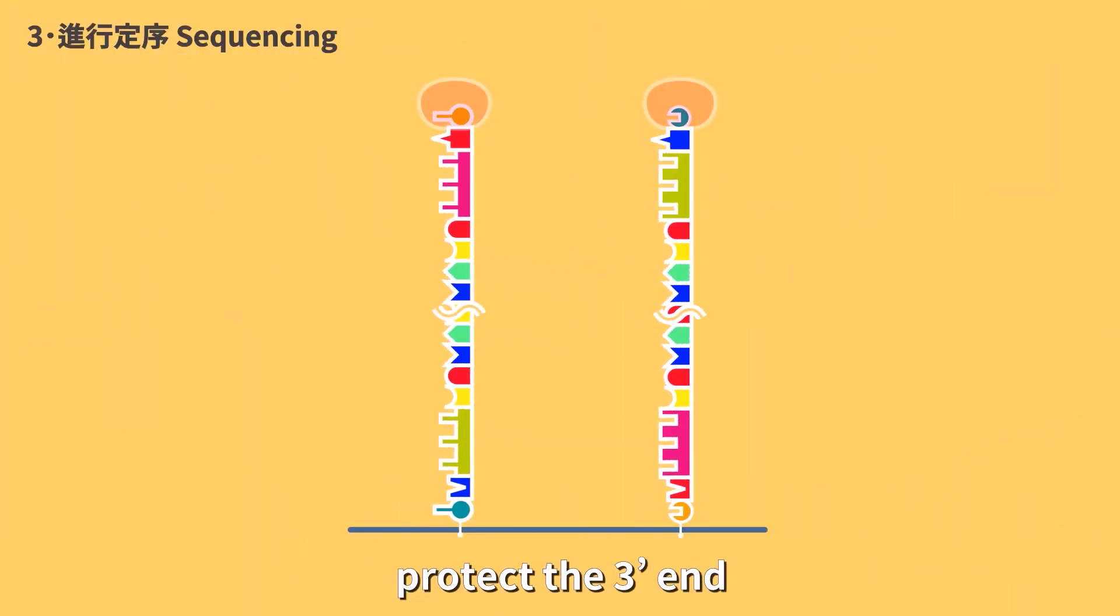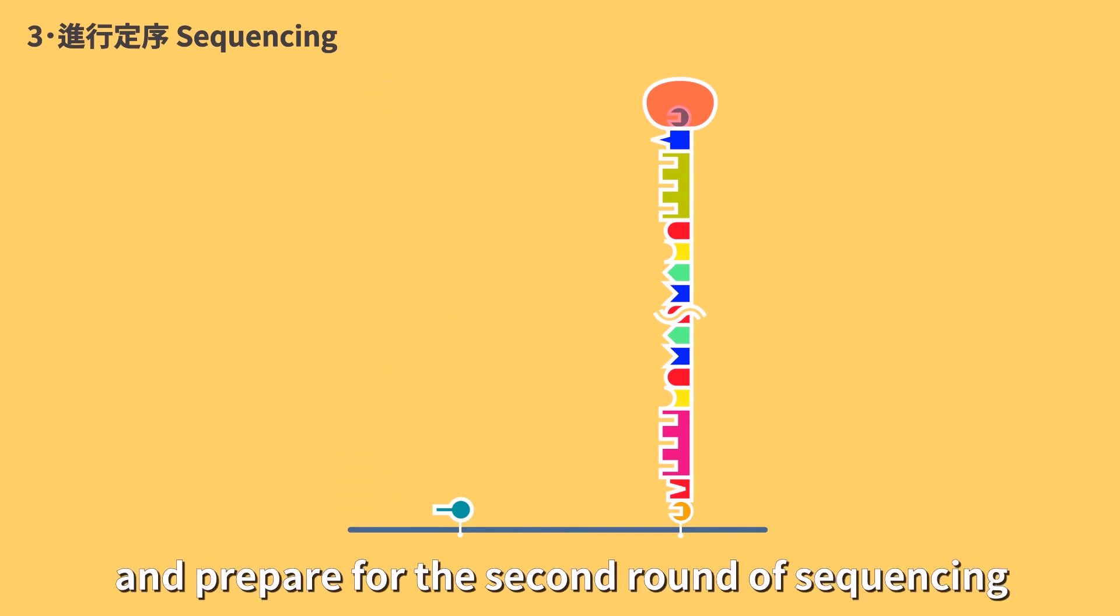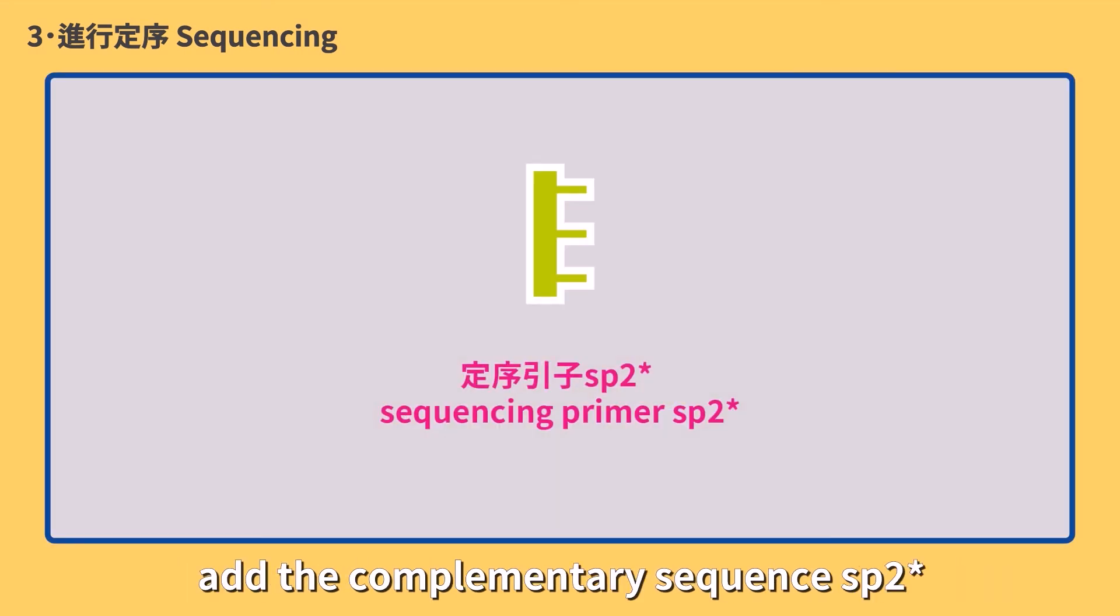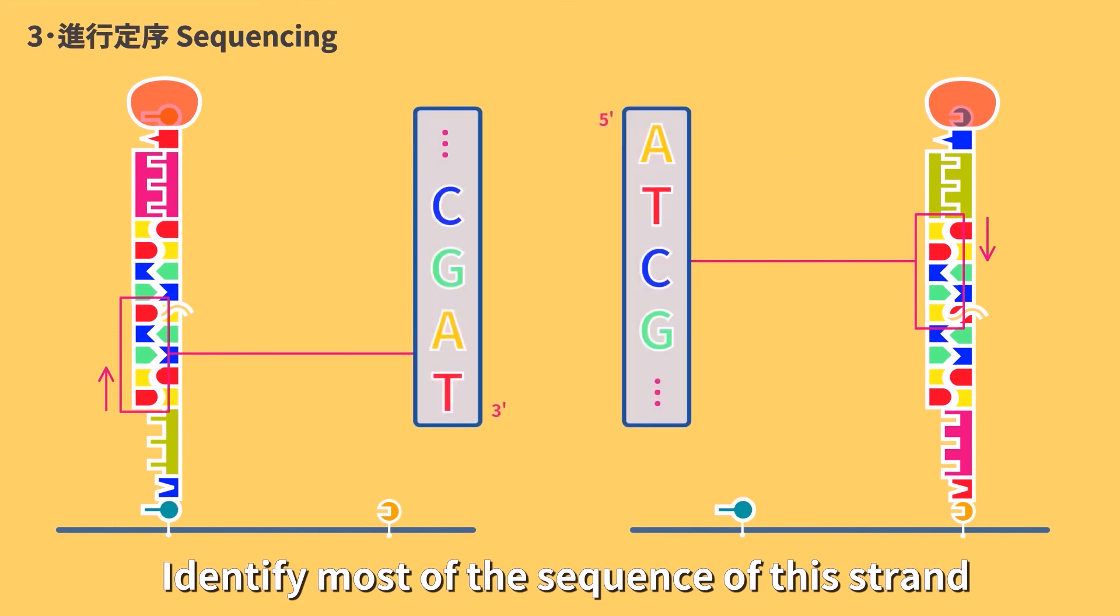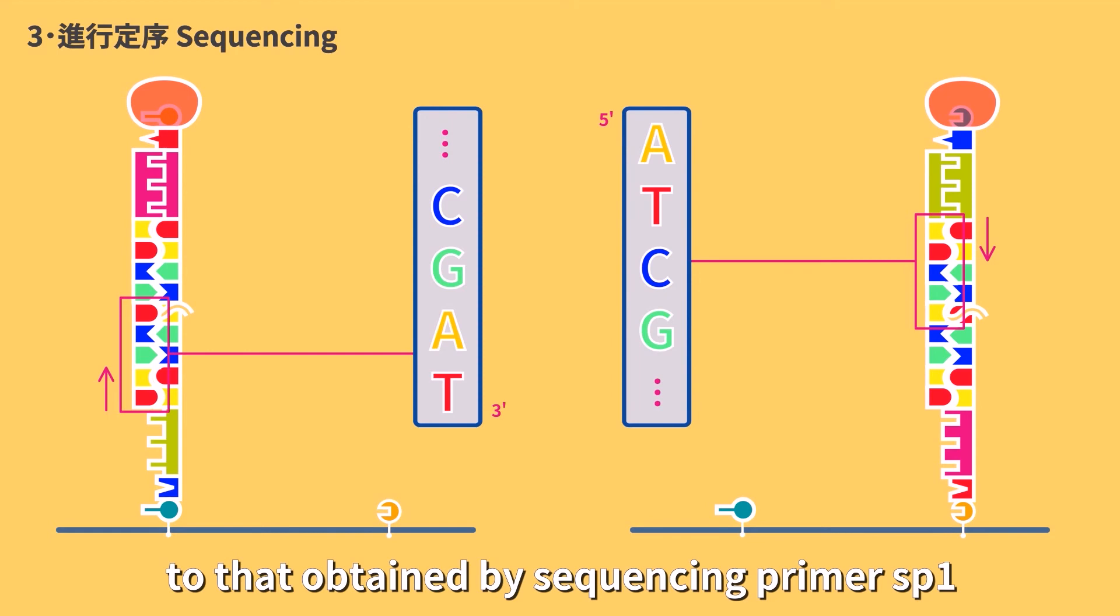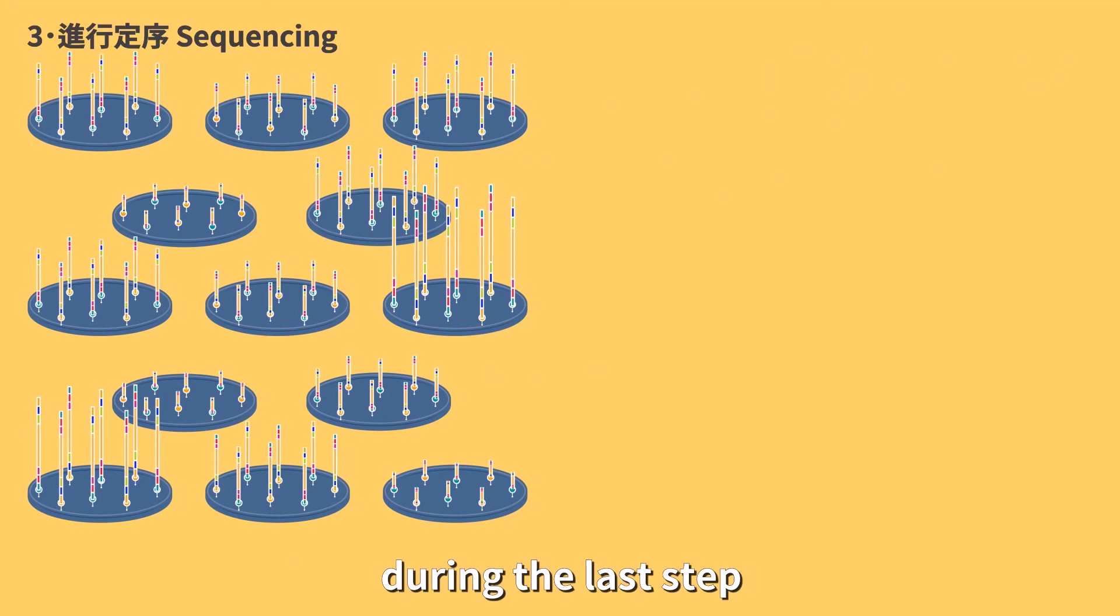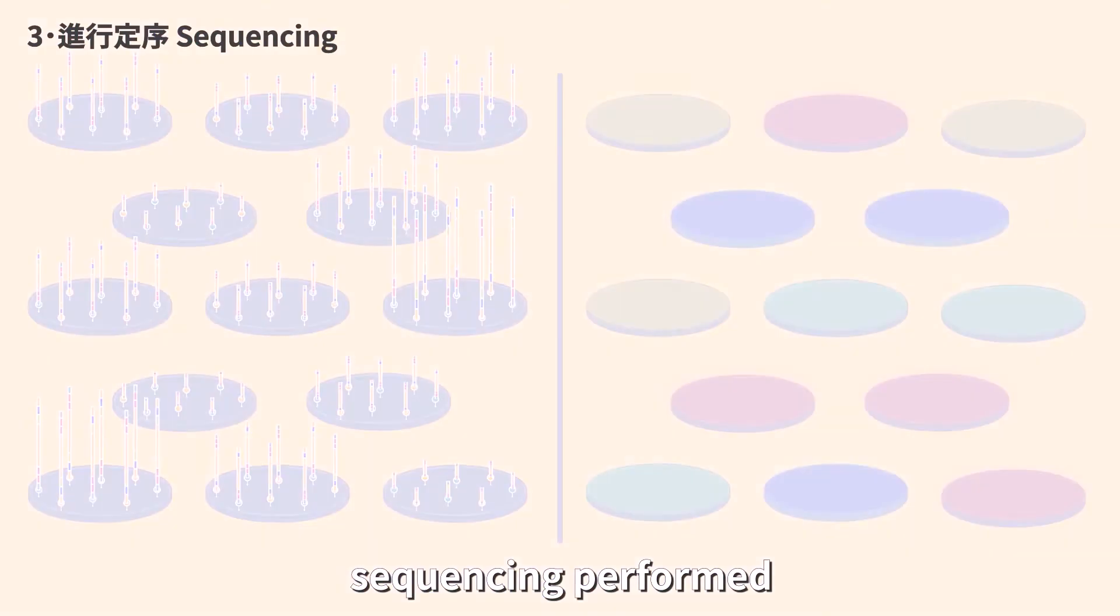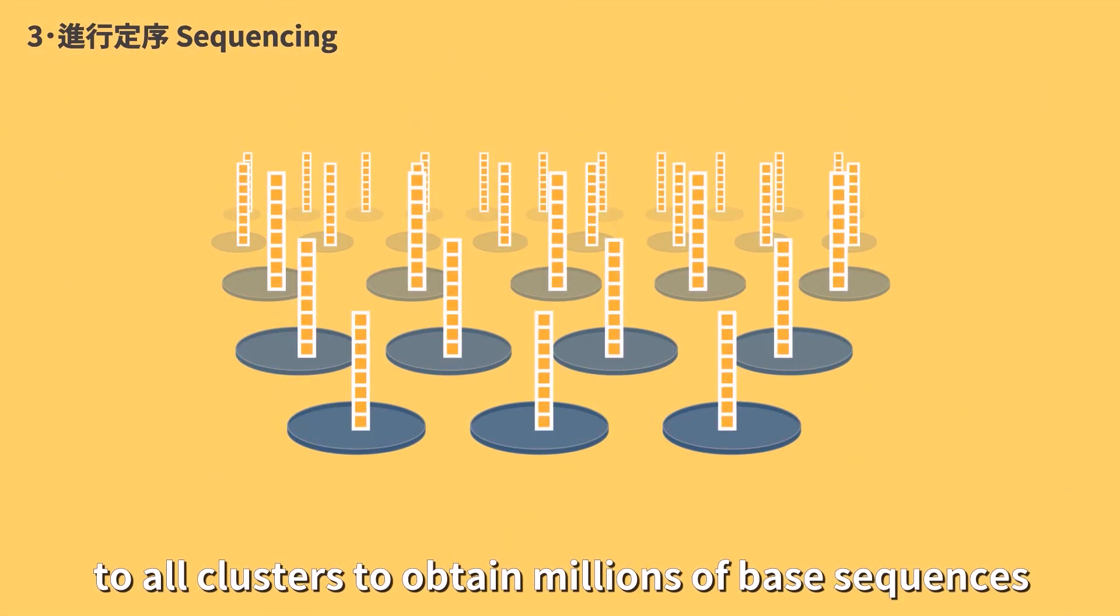Use oligonucleotide B as primer to elongate a complete strand. Denature the double strand, protect the 3 prime end, excise the template strand at the oligonucleotide A connection, and prepare for the second round of sequencing. At the second round, add the complementary sequence SP2 star of sequencing primer SP2 as primer for elongation. Identify most of the sequence of this strand so that the complementary sequence data can be compared to that obtained by sequencing primer SP1. Since millions of DNA clusters have been generated in the flow cells during the last step, sequencing performed during this step is conducted simultaneously to all clusters to obtain millions of base sequences.